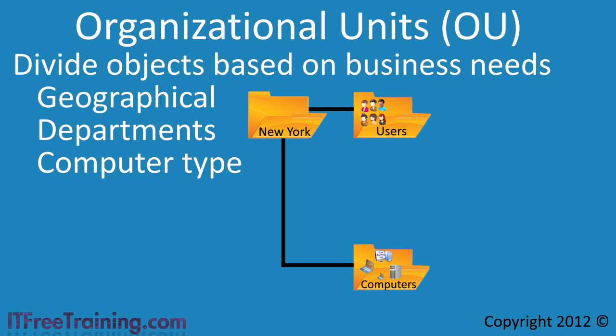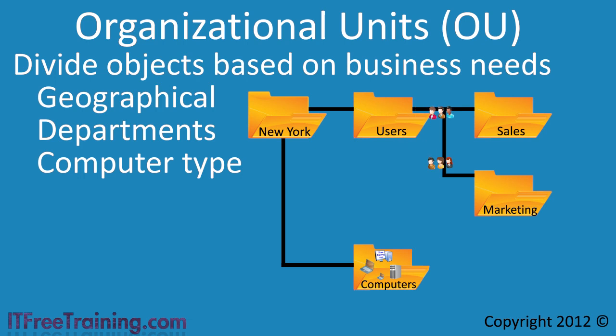In a lot of cases, administrators will choose to create organizational units that mirror the business. In this example, two additional OUs are created called Sales and Marketing, and in these OUs are placed the users for Sales and Marketing. Organizing Active Directory objects like this helps you sort out your users and computers based on your business needs, but there are other advantages to creating a structure like this.